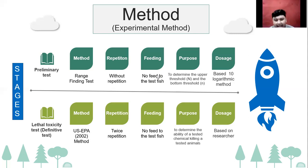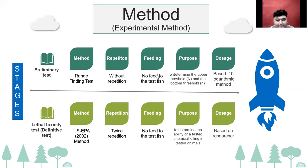The unit converted into ppm: 200.11 grams per liter equals 2,110 mg per liter or ppm. To obtain a stock solution of 1000 ppm, five milliliters of standard solution was dissolved in one liter of water.